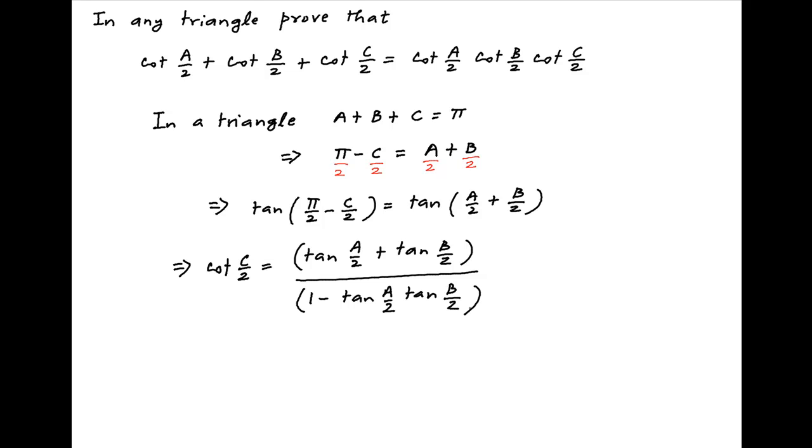Now on the right hand side, divide both the numerator and denominator by tan A upon 2 times tan B upon 2. Therefore, the right hand side can be written as cot of B upon 2 plus cot of A upon 2 divided by cot of A upon 2 cot of B upon 2 minus 1.